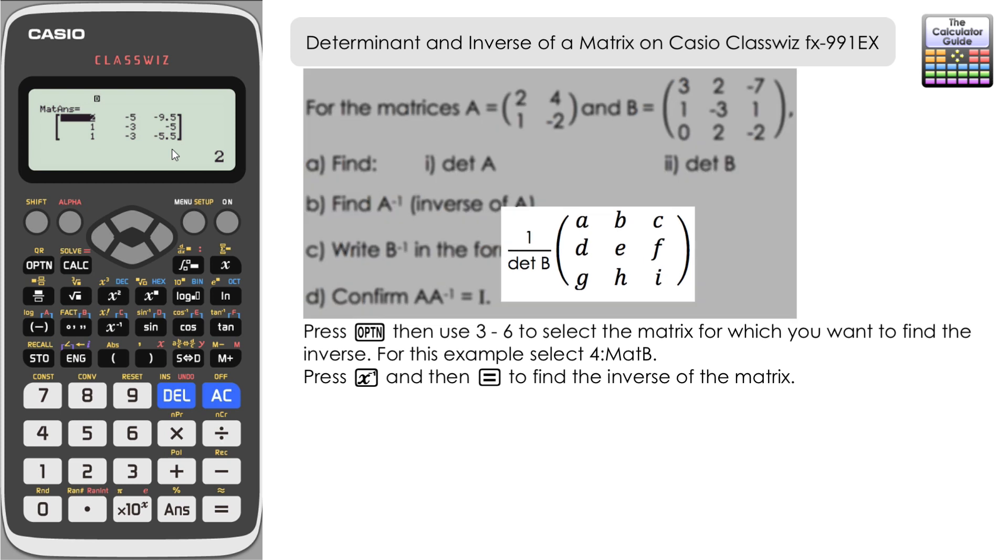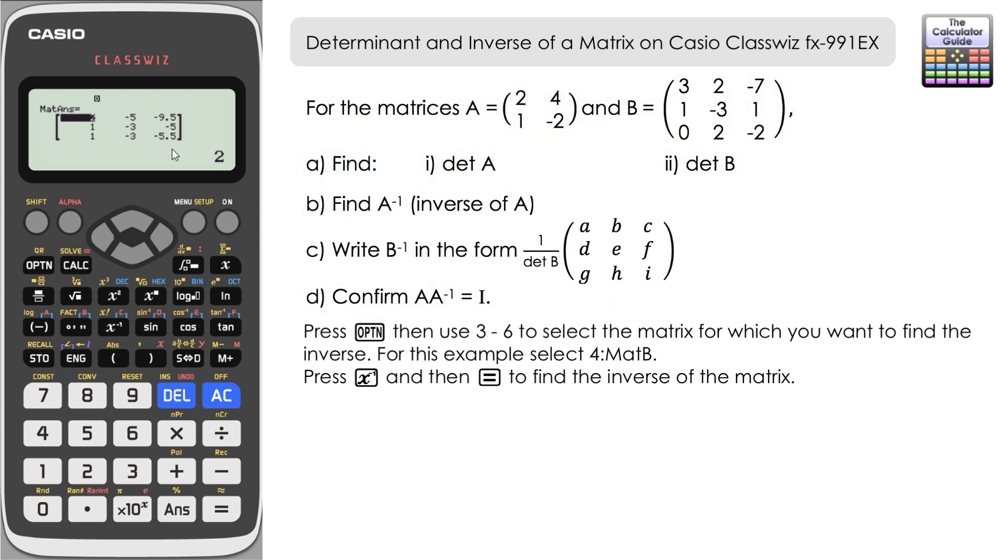But what if you need to write it in the form one over determinant B and then have different values there, a to i? Well they're going to be different from what they're displayed here on the calculator, but we can find those quite easily. Well firstly we know that the determinant of B is 2 from part a of the question, so the fraction that we'll have at the front will be one half. And in order to find the values for the matrix, all we need to do is multiply our answer here, matrix answer, by the determinant of matrix B.